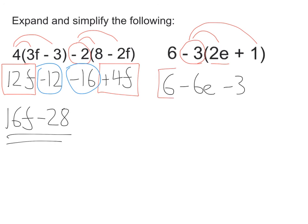Let's see what I've got. We've got a 6 and a take away 3. And I've got a negative 6e. So 6 take away 3 is 3. And my negative 6e stands there. So my answer is 3 take away 6e.